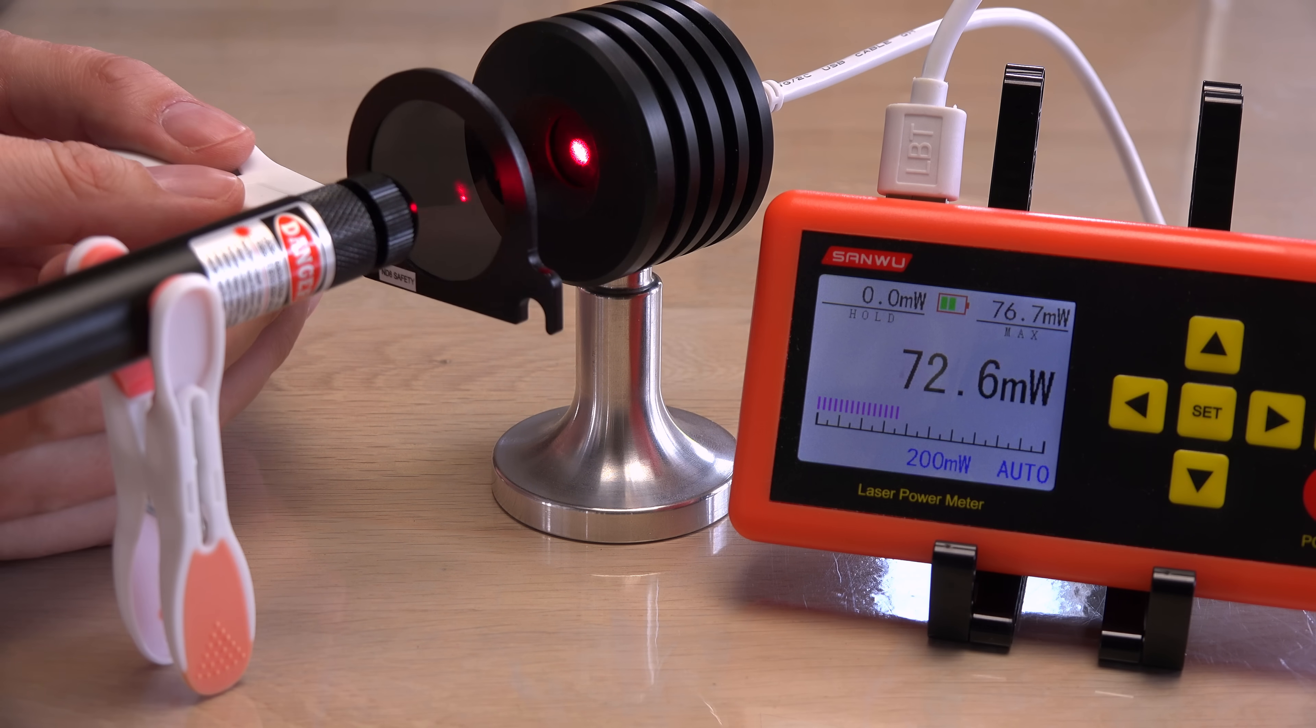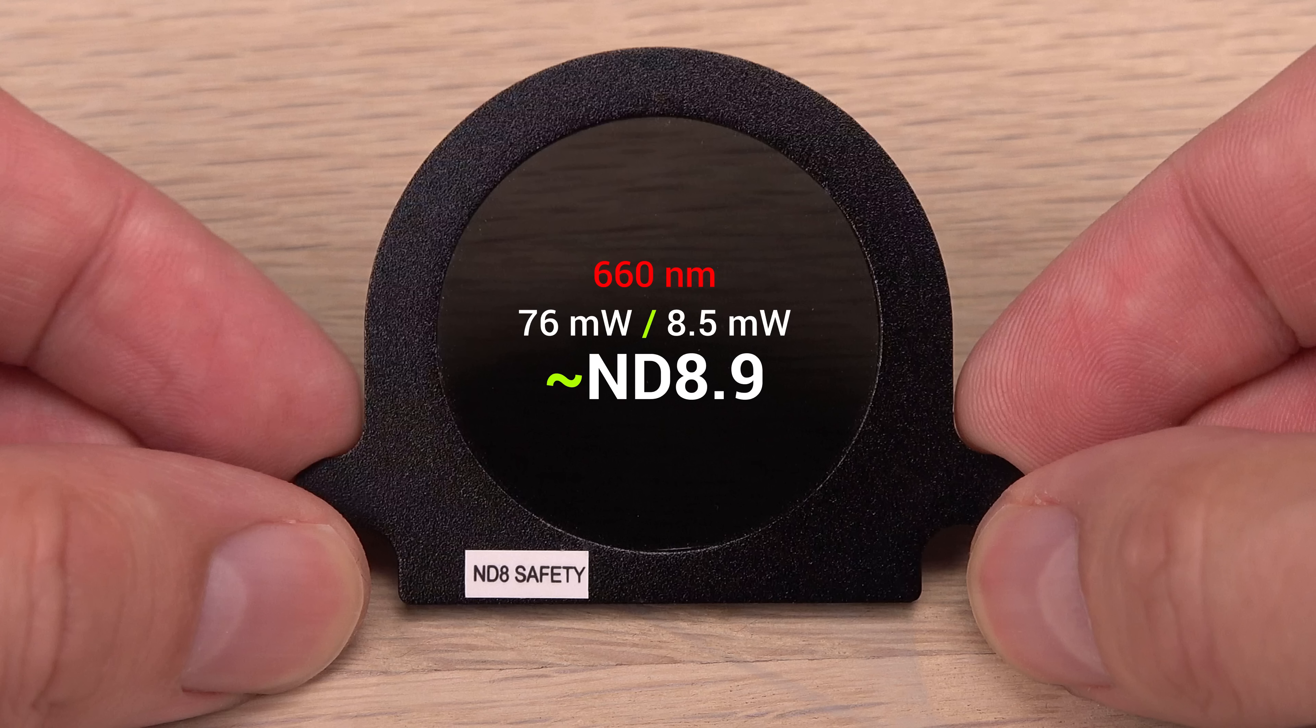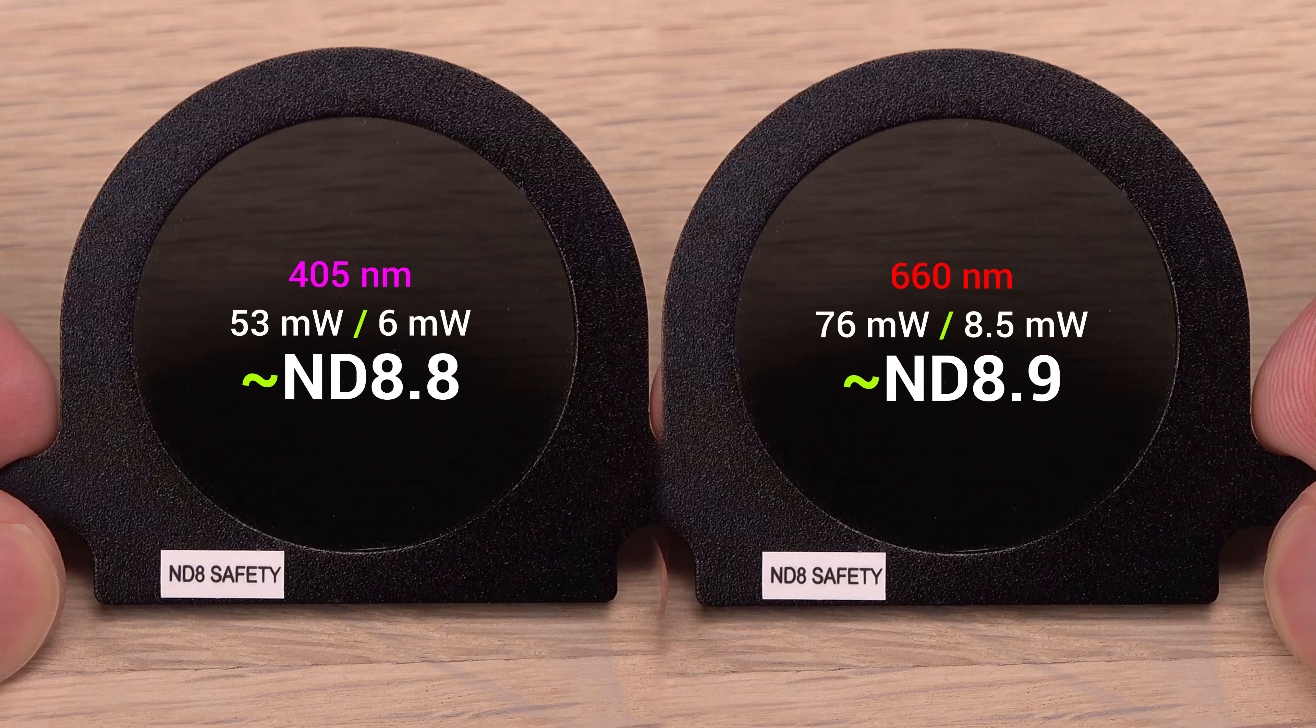Here is the effect of the two filters. Stabilizes around 8.5 milliwatts, still close to ND9 for the labeled one. Nice consistency like you would expect from a quality neutral filter, lowering all colors by the same amount. Otherwise it wouldn't be neutral.